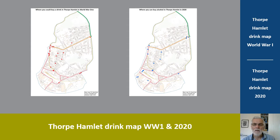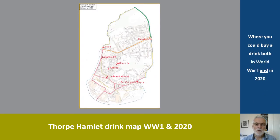And then another map showing where you can buy alcohol today, either in pubs and bars or in shops. I haven't included places where you can have a drink but only with a meal, and copies of both maps are in the notes. The attribute table I showed you is essentially a database. So to show what's possible in terms of manipulation, here's a map that shows just the places where you can get a drink today and you could have got one in World War I. I've also shown how you can add labels.